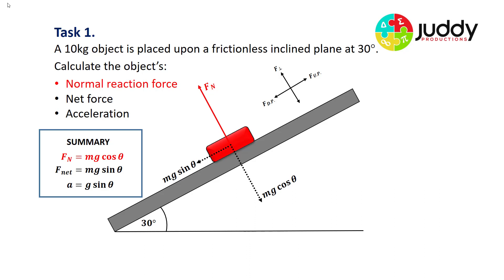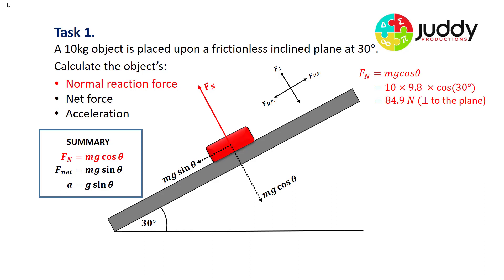First, the normal reaction force. Using the equation Fn equals Mg cos theta, we substitute in our values: mass of 10 kg, gravitational field strength of 9.8 N/kg, and angle of 30 degrees. That gives us a normal reaction force of 84.9 newtons, perpendicular to the plane, pushing from the surface of the plane upon the object.